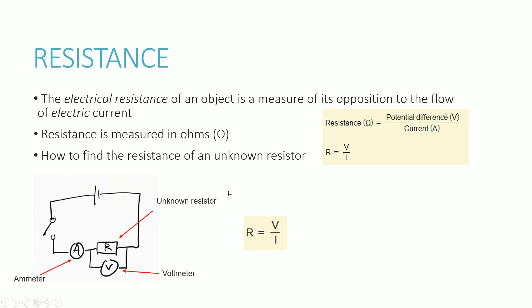The next thing we're going to be looking at is resistance. The electrical resistance of an object is a measure of its opposition to the flow of electrical current. Resistance is measured in ohms. The formula you have to know is that resistance equals potential difference divided by current, where potential difference is measured in volts and current in amps.